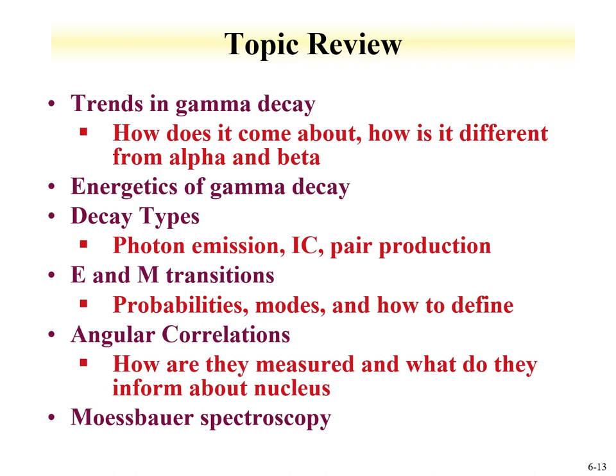We talked about transition probabilities, both electric (E) and magnetic (M), and how they can be classified based on the fact that a photon comes from electromagnetic radiation. You should understand how to determine the transition from spin and parity from one state to another during a photon transition, and define it in terms of E and M transitions. You should understand angular correlations — that they occur, what they mean about something in the nucleus, and how they are measured. Finally, we discussed Mössbauer spectroscopy, a technique awarded the Nobel Prize to Mössbauer at the Technical University of Munich. You should understand how it is used and how it is similar to UV-visible spectroscopy, except you're talking about nuclear states rather than electronic states.